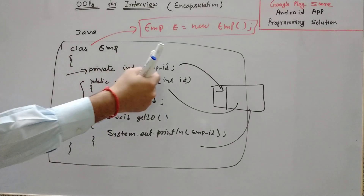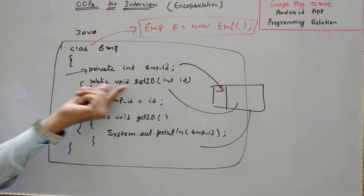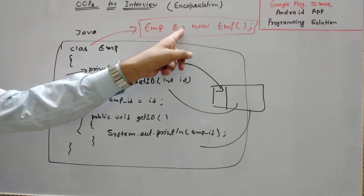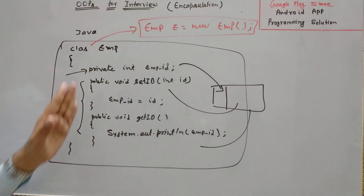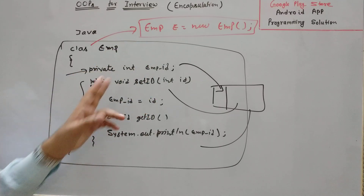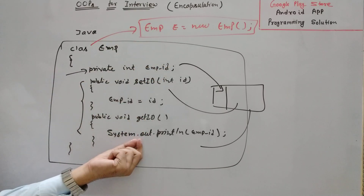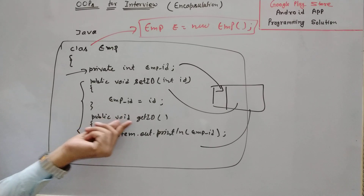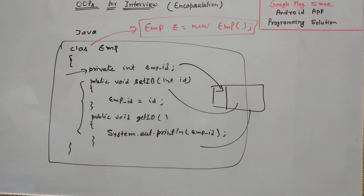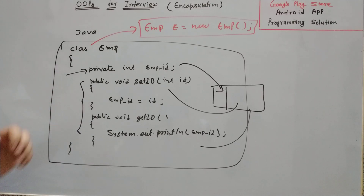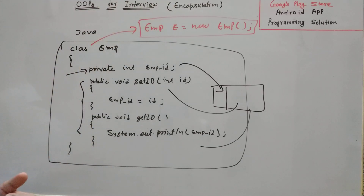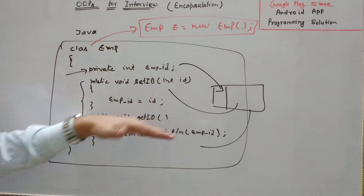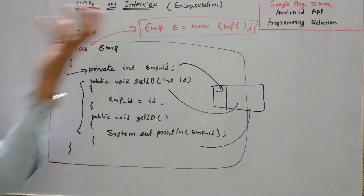From outside we cannot change the employee ID. We can set the employee ID with the set function whenever we call the set function inside that class with the help of this object. But from outside — without the object e — we cannot change the employee ID, and without this object e we cannot call getID either. Encapsulation is a way of wrapping data members and member functions into a single unit or bundle, and it provides abstraction: no one from outside can see what is inside the class.